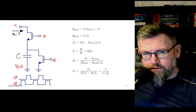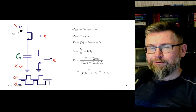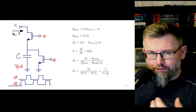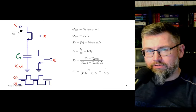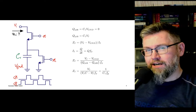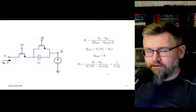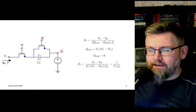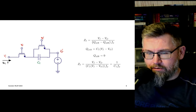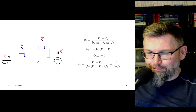I want to redraw this circuit slightly differently, because switch capacitor circuits are not always drawn in a manner that makes it intuitive to understand how they work. I'll rotate it horizontally and call the output VO. All I've done is take this circuit, rotate it, and rename ground.